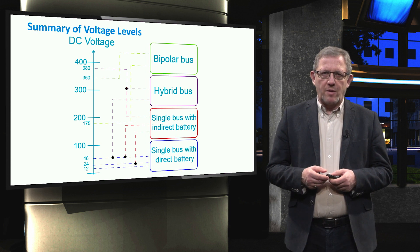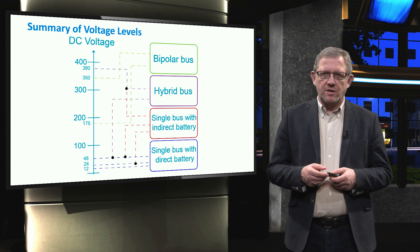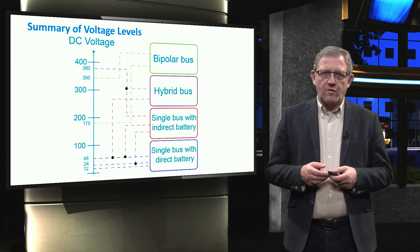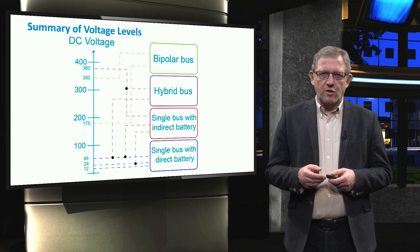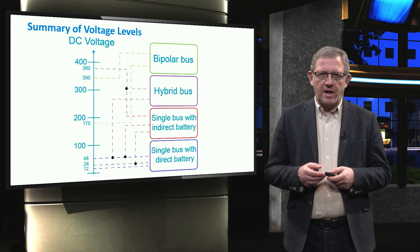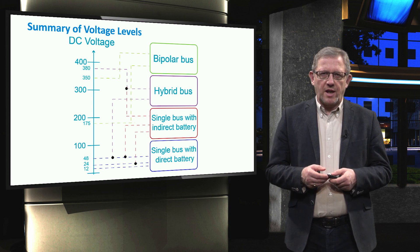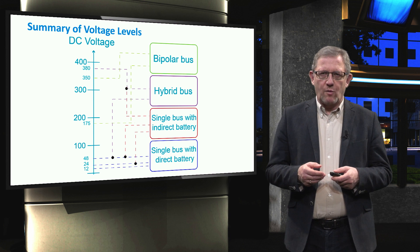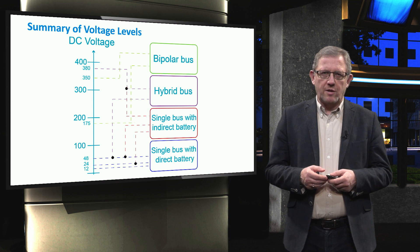In this slide we provide a summary of voltage levels for all the previously discussed DC layouts. The typical voltages for a single bus with direct battery connections are 12, 24, and 48 volts. Note that the DC link voltage of this single bus layout is dependent on the state of charge of the battery, therefore not very high DC link voltages can necessarily be achieved. In a single bus with indirect battery, the typical DC voltages are 24, 48, and even high values like 380 volts, where a boost converter topology can be used to step up the battery voltage. A hybrid bus may operate at lower voltages like 48 or higher ones like 380 volts. Typical voltage levels for a bipolar bus would be 175 volts and 340–350 volts.